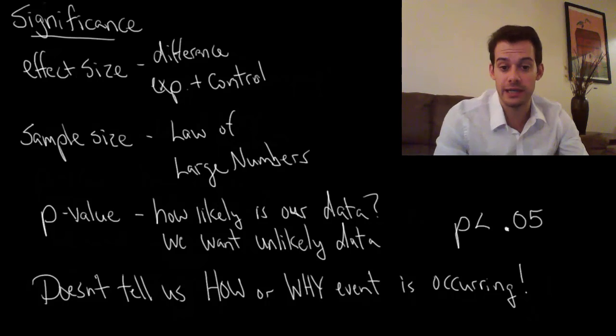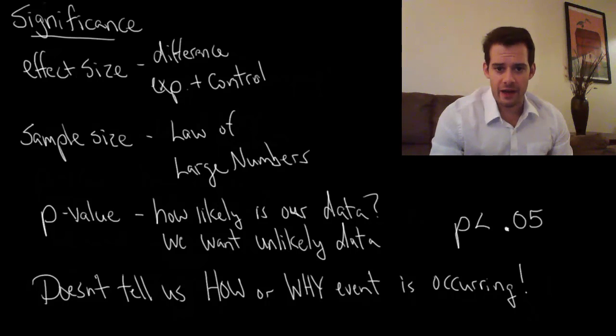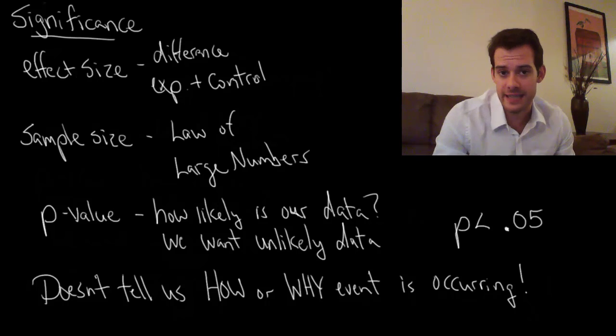So this is really important because when we see a low p-value it doesn't mean that the hypothesis is correct. The hypothesis is just the possible explanation for this data. But the p-value doesn't know what the hypothesis is. The p-value just says it's unlikely for this to happen.